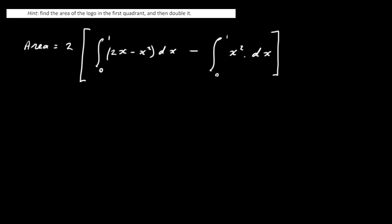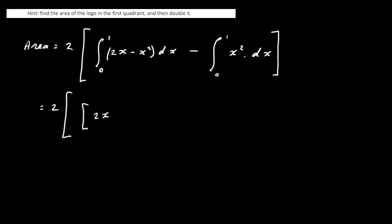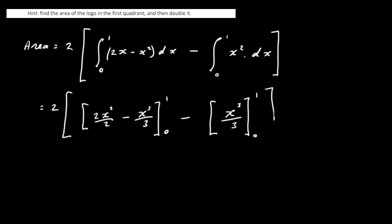This is the longer way of doing it. Integrating 2X minus X squared: the first term becomes X squared, and the second term becomes X cubed over 3, with limits 0 to 1. For the subtracted integral, X squared integrates to X cubed over 3, also from 0 to 1.